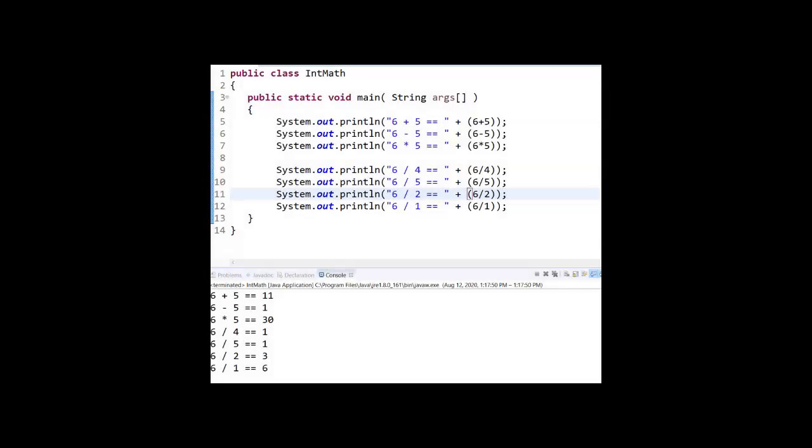Let's talk about math and math operations. Let's look at some examples and make sure that we understand exactly how this works. In this example, we're looking at some integer math. The addition, subtraction, and multiplication, you get exactly what you'd expect. You get 11, 1, and 30.